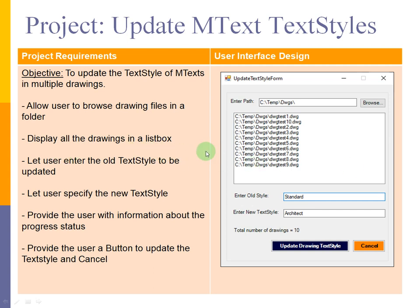The next project we will be developing is all about updating the mtext text style. We have a requirement to update the labels in our drawings across multiple drawings, or some text that was supposed to be in a different style but was created using an inappropriate style. This project will address that requirement — for example, if we have tens or hundreds of drawings to update with a certain style, this can help a lot.